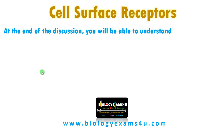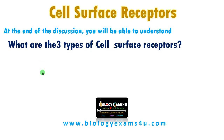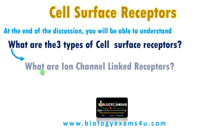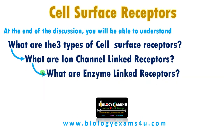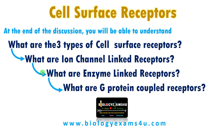Hi friends, hope you are fine. In the last video we discussed about three stages of cell signaling. In this video let us understand what are cell surface receptors. At the end of this discussion you will be able to understand what are cell surface receptors, what are ion channel linked receptors, enzyme linked receptors and G protein coupled receptors. Let's move into the detail.